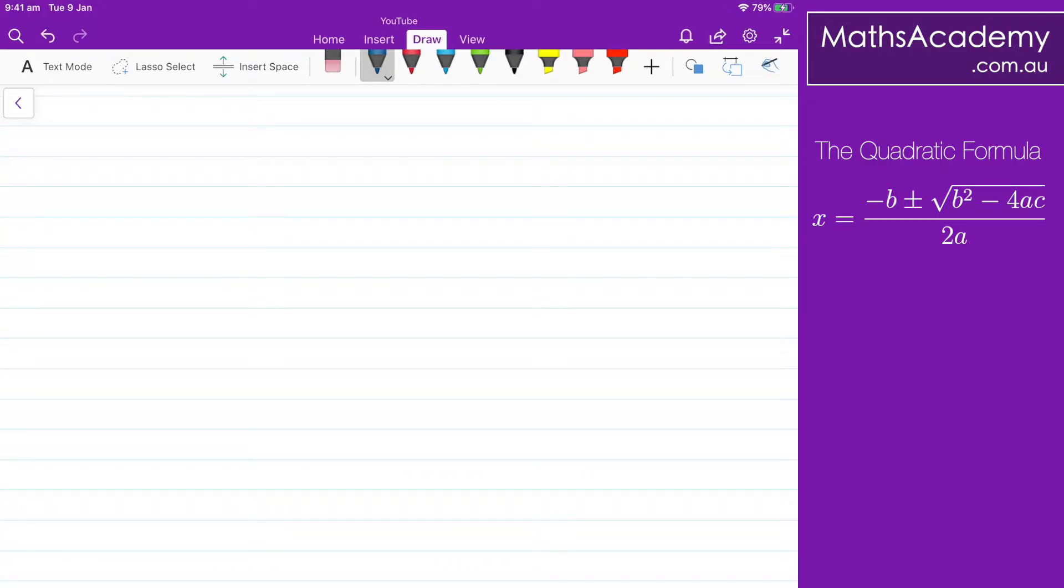The first thing I'm going to do is to write out the general form for a quadratic equation and that is ax² + bx + c = 0. I'm now going to subtract c from both sides so that will leave me with ax² + bx on the left which will be equal to -c.